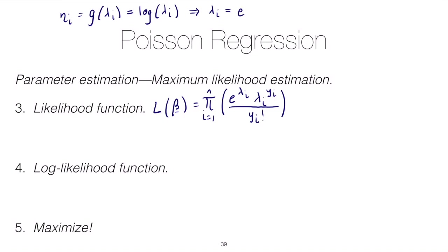We know that the link function sends the mean, which is the rate parameter, to the linear predictor. So this means that lambda i should be equal to e raised to the linear predictor.